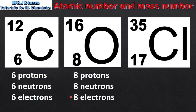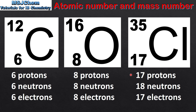The last example is chlorine-35. The atomic number is 17, which means it has 17 protons in the nucleus. If we subtract the atomic number from the mass number we get the number of neutrons, which is 18. So chlorine-35 has 17 protons and 18 neutrons. It's a neutral atom so the number of electrons is equal to the number of protons.